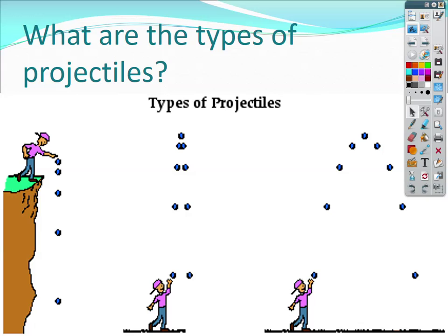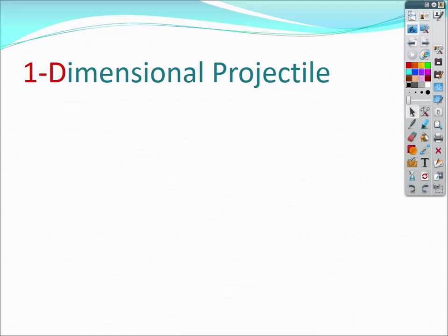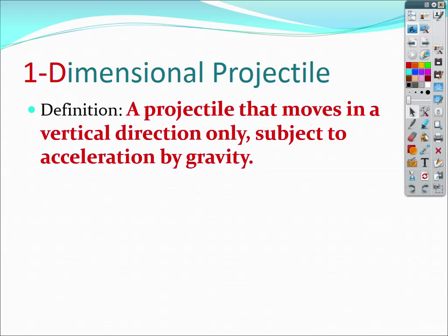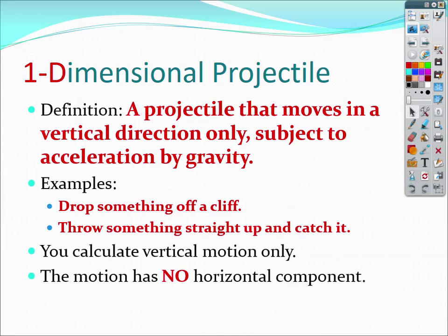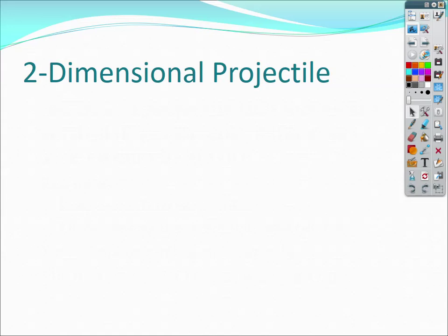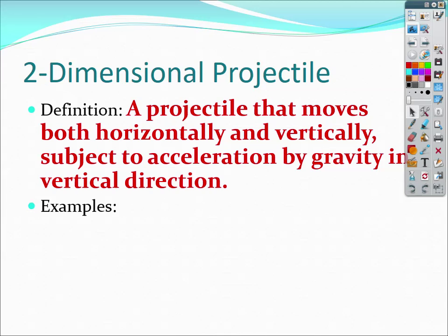Here are different examples of projectile motion: dropping, throwing an object straight up, and throwing it at an angle — all considered projectile motion. For one-dimensional projectiles, that's what we did last unit: the projectile is only moving in the vertical direction, dropping or throwing something straight up. We calculated the vertical motion with no horizontal component. For two-dimensional motion, now it's moving both horizontally and vertically, accelerated due to gravity. Examples include throwing a softball to somebody, firing a cannon horizontally off a cliff — you calculate both vertical and horizontal motion.